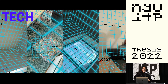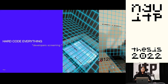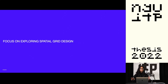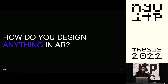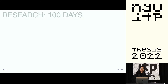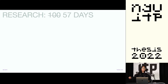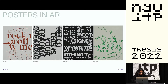Let's talk about the tech. I started measuring any detected surfaces, then I decided to hard code everything and focus more on exploring spatial grid design, which was a task in itself. But before I did that, I needed to know how to design anything in AR. I used my 100 days as a space for design research — 57 days, if I'm being honest. I'll finish it. They all started as posters. So I translated the 2D grid on a poster into a spatial grid to create an AR experience.